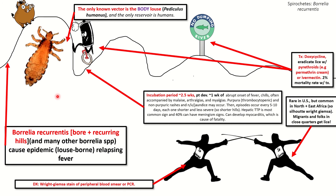The mortality rate is 2% with treatment, but much higher without treatment. These treatments are represented within the image: a doxycycline unicycle for doxycycline, a spray can running toward the body louse for the pyrethroids — which often come in spray cans but also as permethrin cream — and a no-dumping river sign for ivermectin, or 'rivermectin.' And that is Borrelia recurrentis.